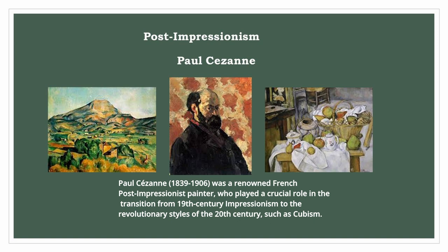Paul Cézanne, 1839–1906, was a renowned French post-Impressionist painter who played a crucial role in the transition from 19th-century Impressionism to the revolutionary styles of the 20th century, such as Cubism.